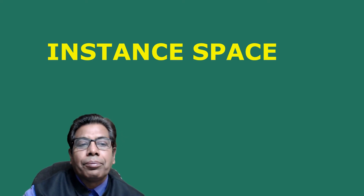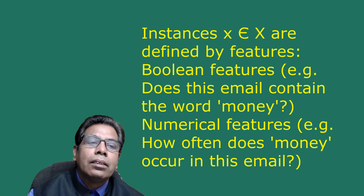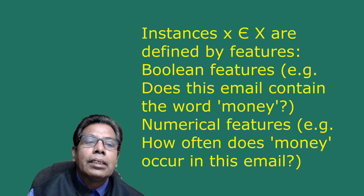Designing an appropriate instance space X is crucial for how well we can predict y. When applying machine learning to a task, we first need to define the instance space X. Instances x ∈ X are defined by features — for example, boolean features such as 'does the email contain the word money?' (yes or no), or numerical features such as 'how often does the word money occur in this email?' The choice of features is crucial but application-specific.